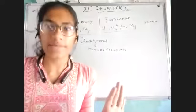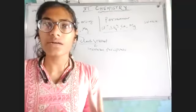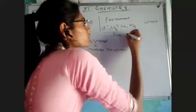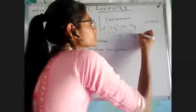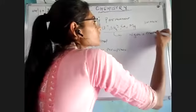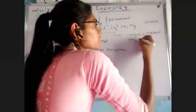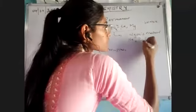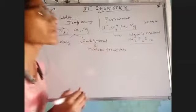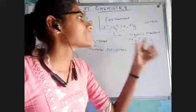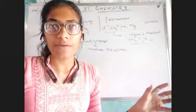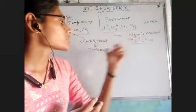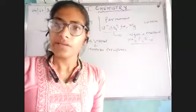For permanent hardness there are four methods for removing hardness, and we have already understood two of them. The first one was the Calgon's method, which contains sodium hexametaphosphate. This has the same principle: it removes the compound by making it into an insoluble precipitate.